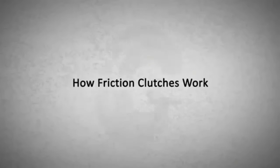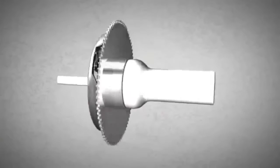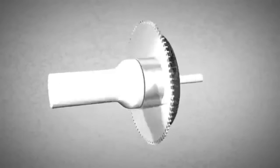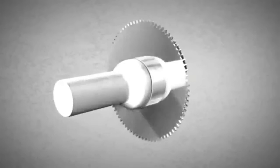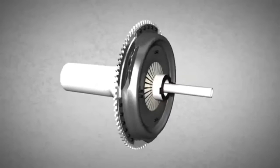Vehicles of today normally use clutches to transmit power produced by the engine to the gearbox. The vast majority of cars and motorcycles rely on dry friction clutches, which will be explained in this animation.